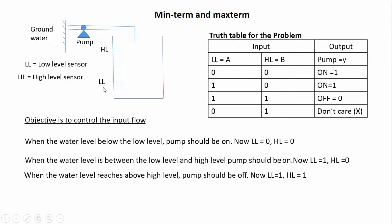I am taking low level sensor input as A, high level sensor input as B, and pump output as Y. The same cases: when A equals 0 and B equals 0, pump is on — meaning when the water level is below the low level, pump on. When water level is between low and high level: LL is 1, HL is 0, then pump on. When the water level reaches the maximum high level: LL also 1, HL also 1, pump should be off.